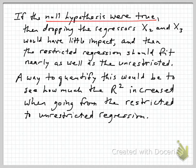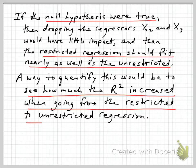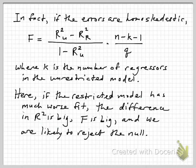If the null hypothesis were actually true, then dropping those regressors would have very little impact because it's only by noise they would have any effect. They're not actually doing anything in the real world. Therefore, the restricted regression should end up fitting nearly as well as the unrestricted. How could we quantify this? We know how to think about the fit of a regression: we use R-squared. So we could see how much R-squared increases when you go from restricted to unrestricted. We know when we add variables, R-squared always goes up. But does it go up by a lot?